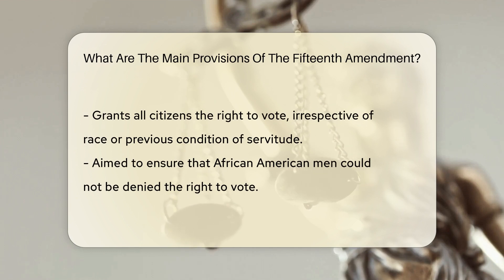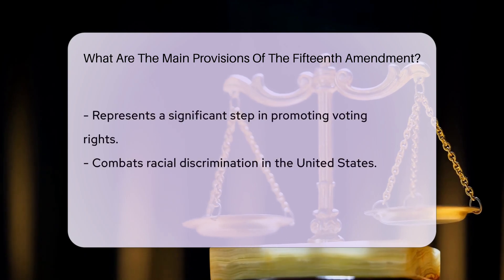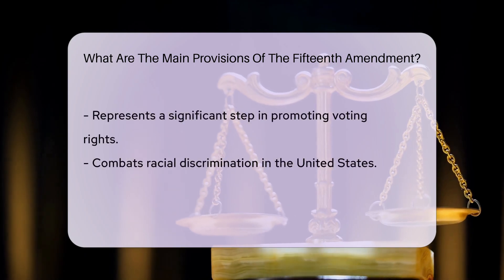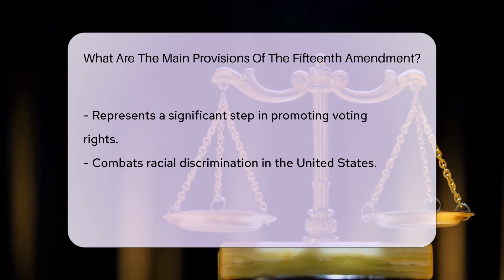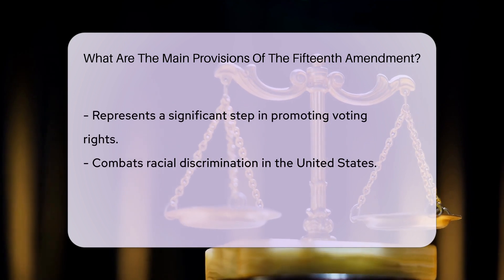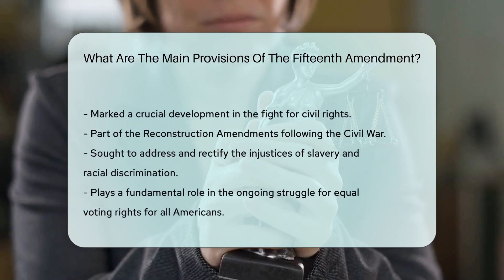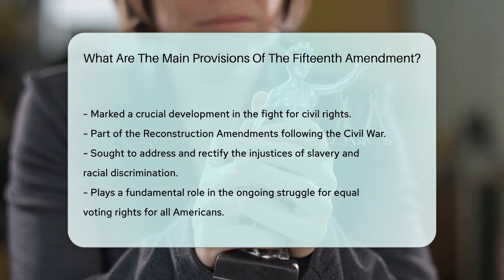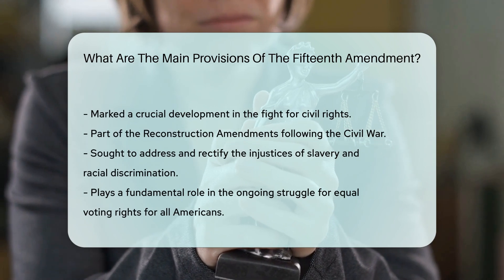It grants all citizens the right to vote, regardless of race or previous condition of servitude. The amendment aimed to ensure that African-American men could not be denied the right to vote. It was a significant step in promoting voting rights and combating racial discrimination in the United States.